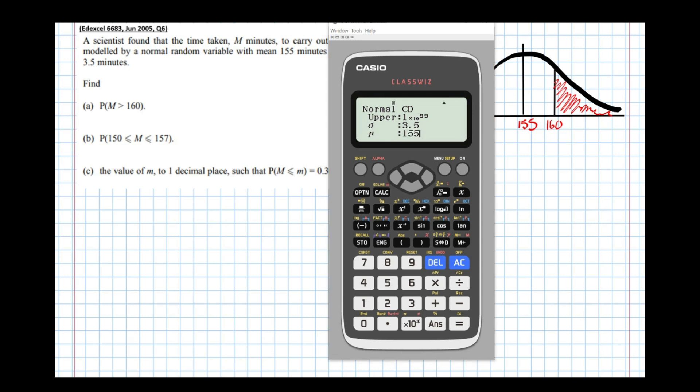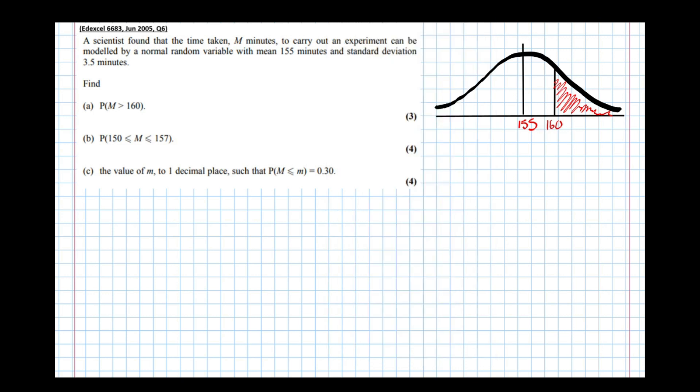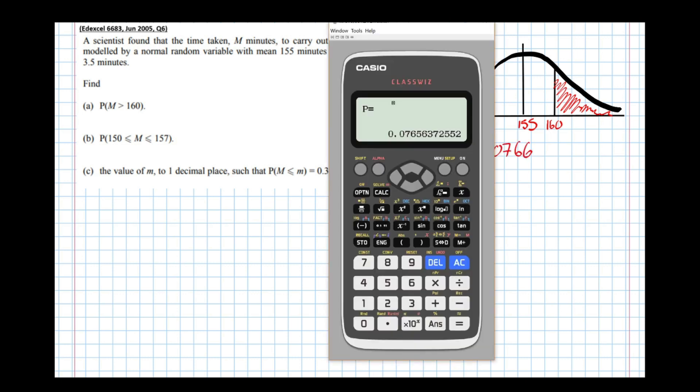And that the mean is 155. So pressing equals, we get the answer, which is 0.0766 to 3 significant figures. So part A, P equals 0.0766 to 3 significant figures.